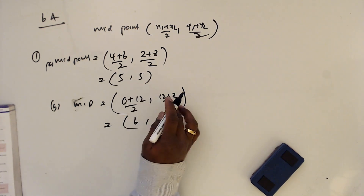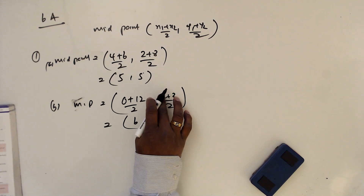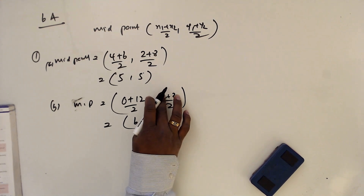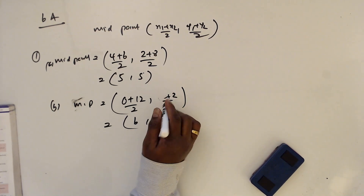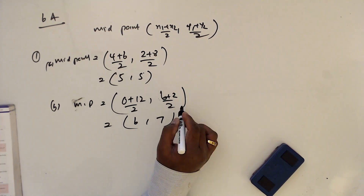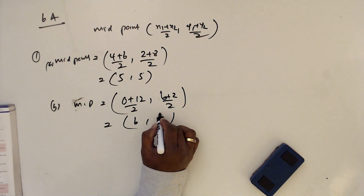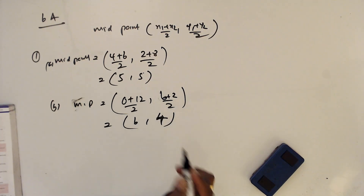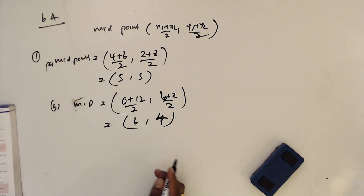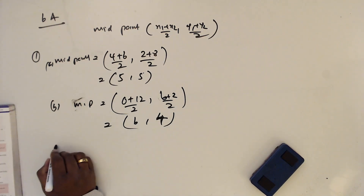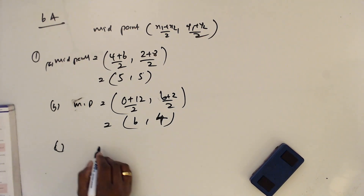Sorry — correction: this is 6 plus 2, so 8 divided by 2 is 4. So part b midpoint is (6, 4).